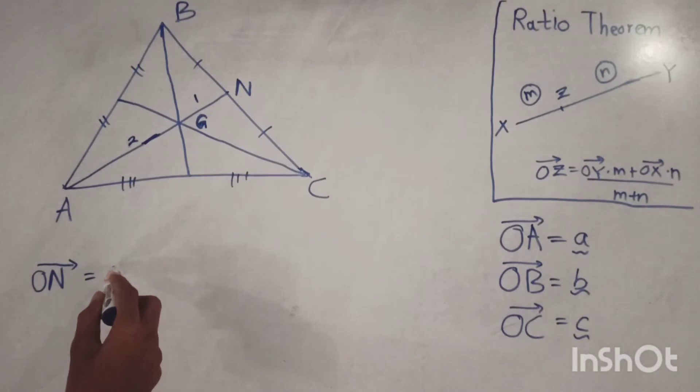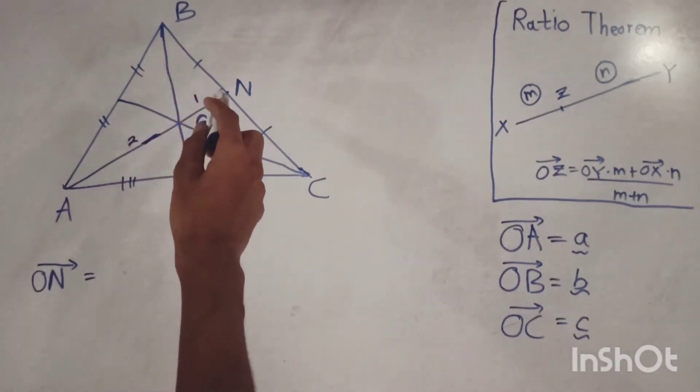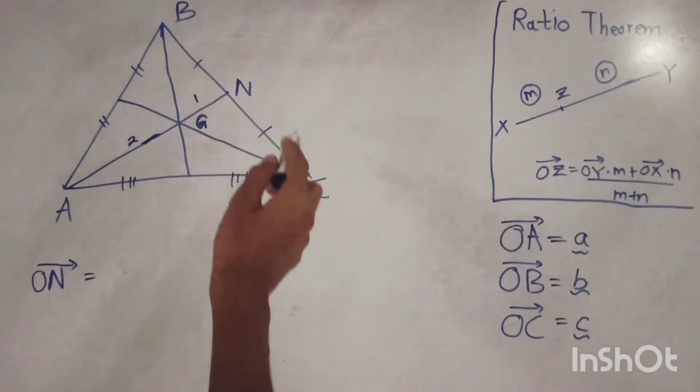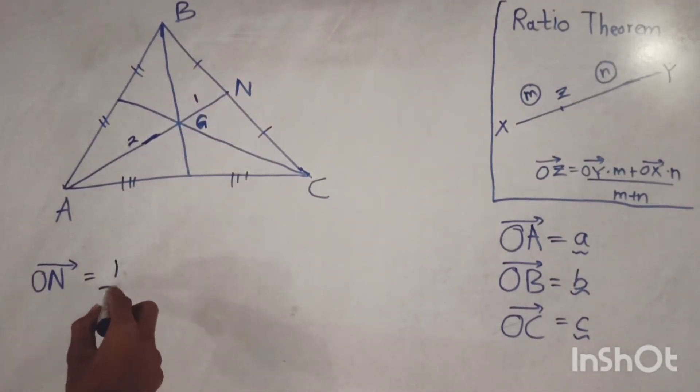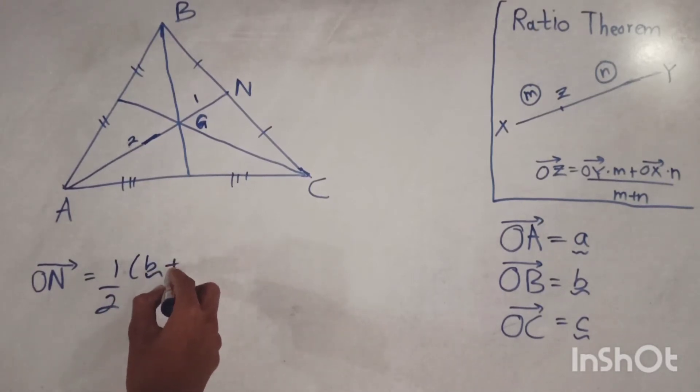As the midpoint of BC, we can write it as half times vector b plus vector c.